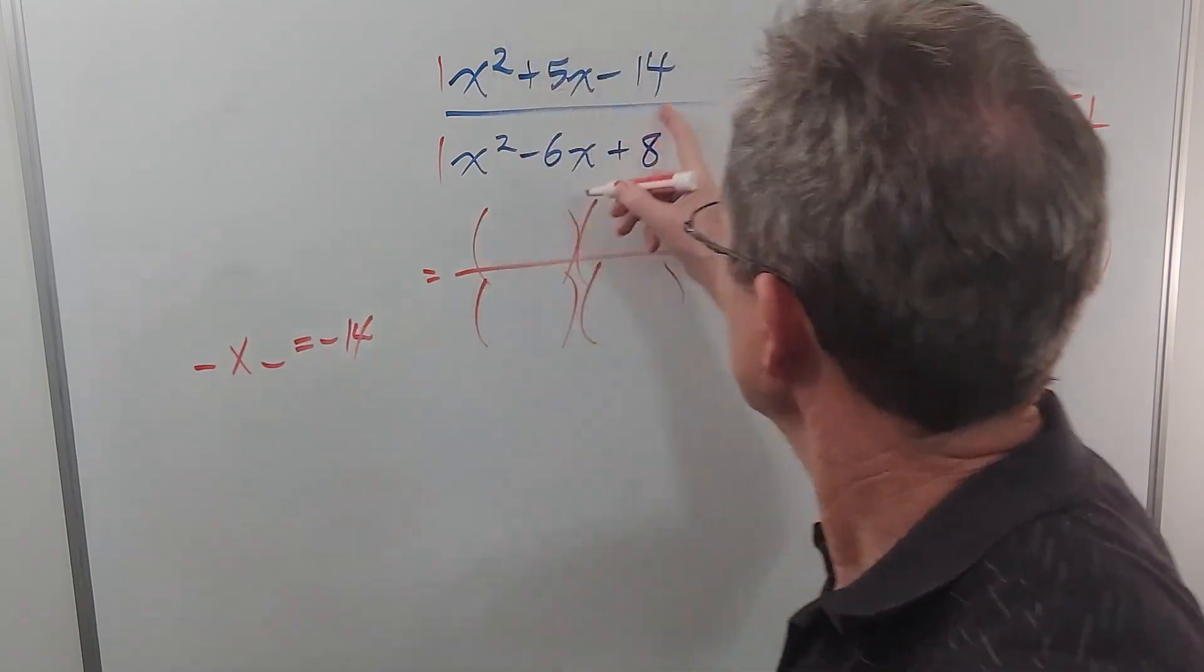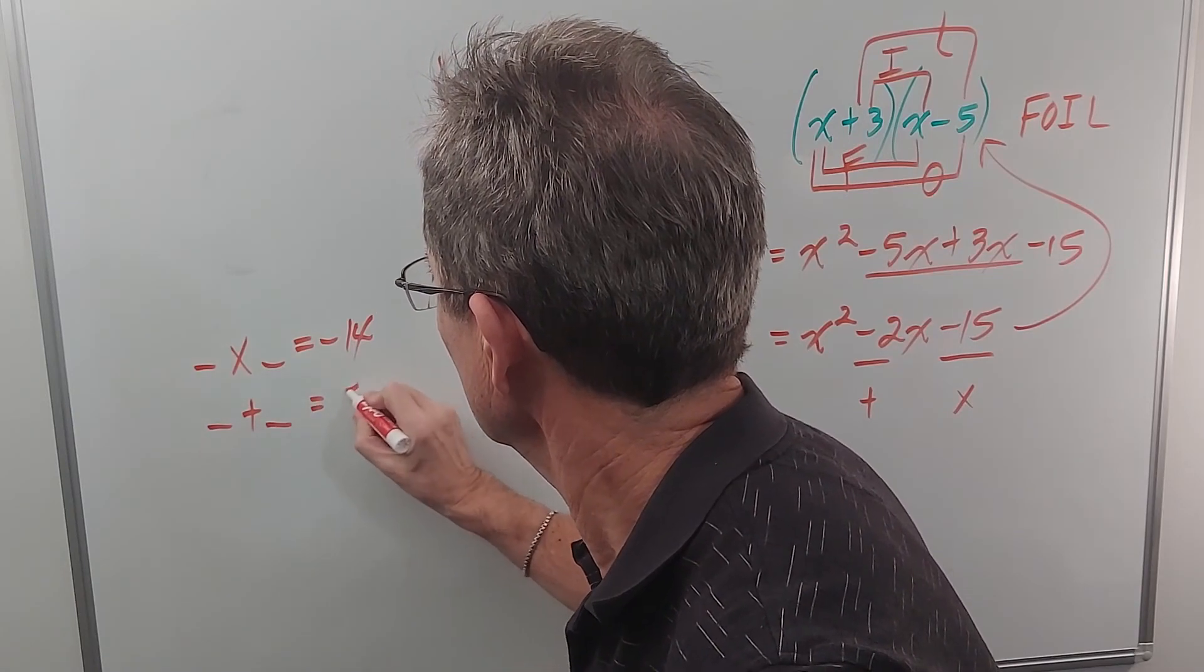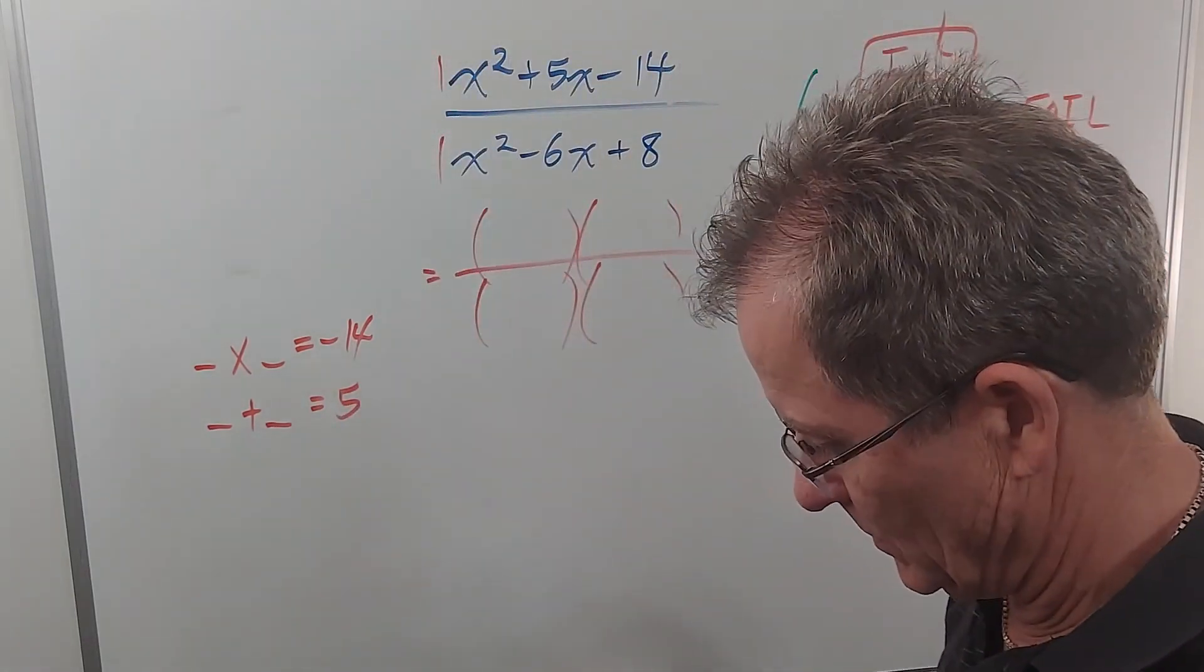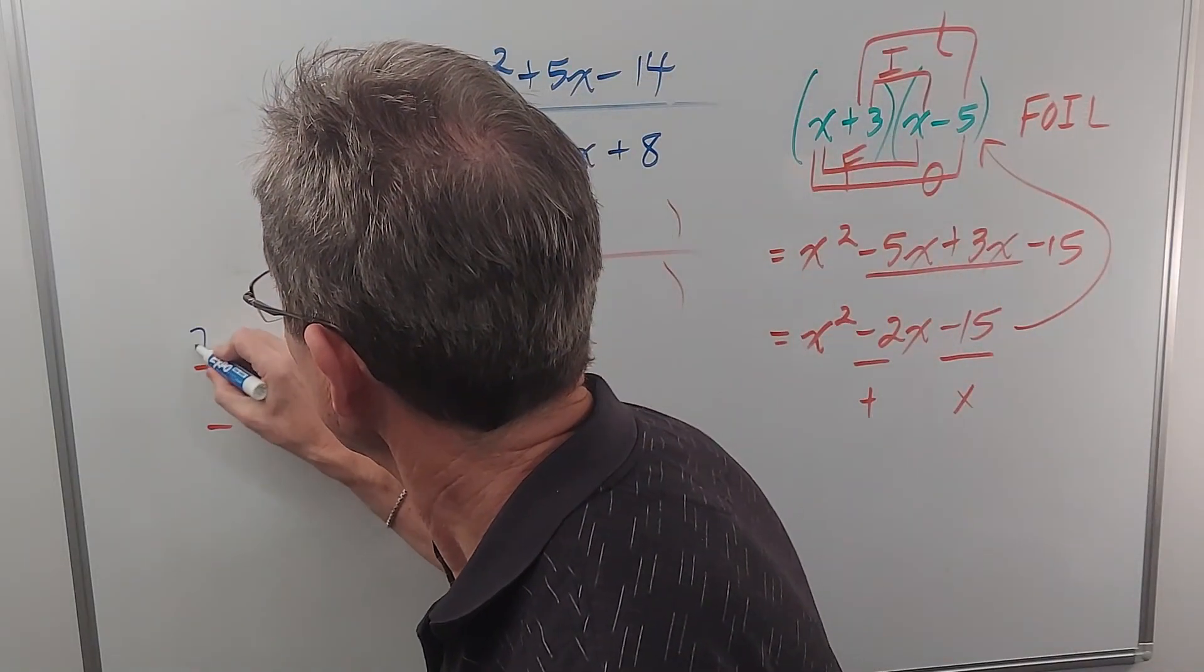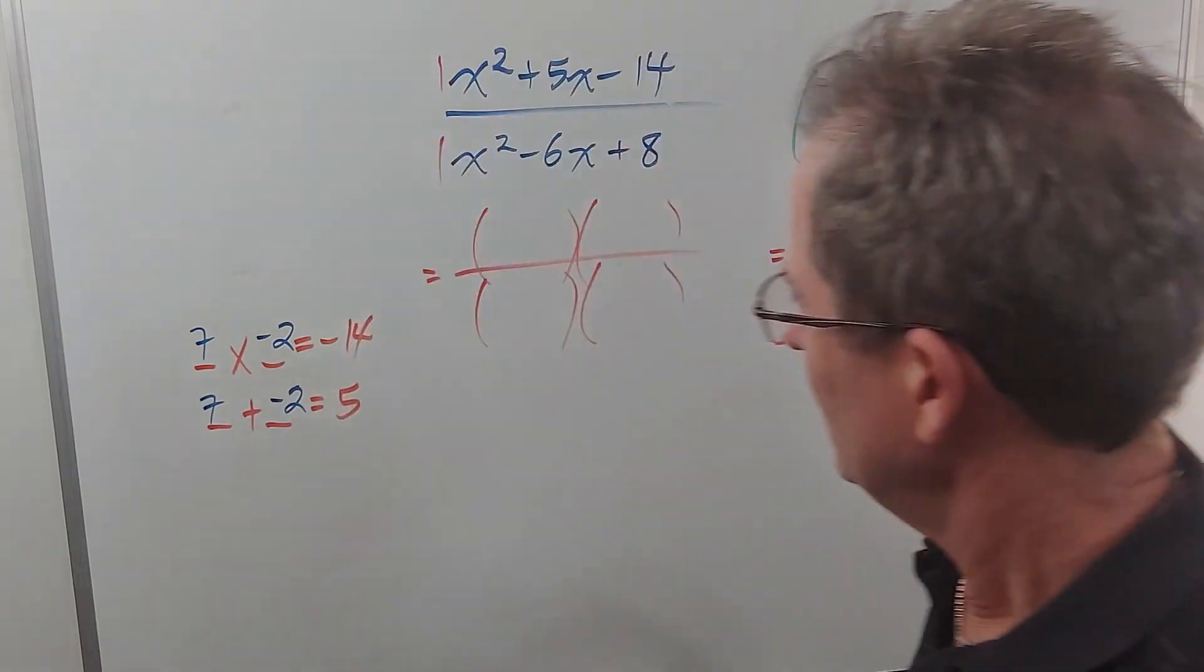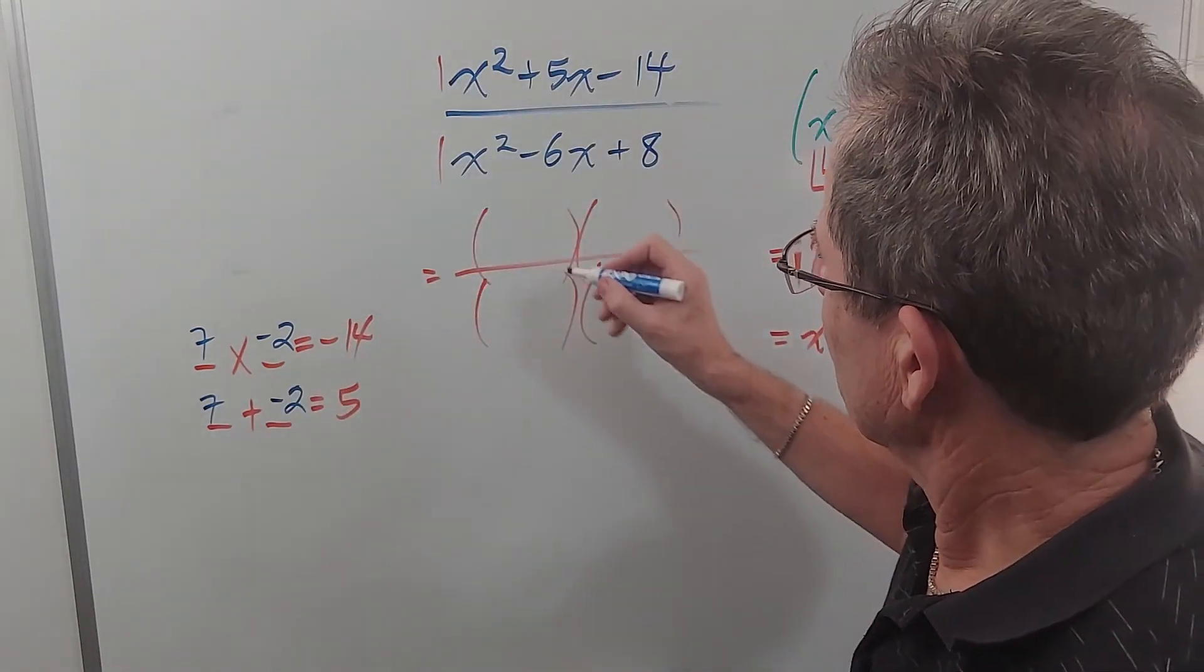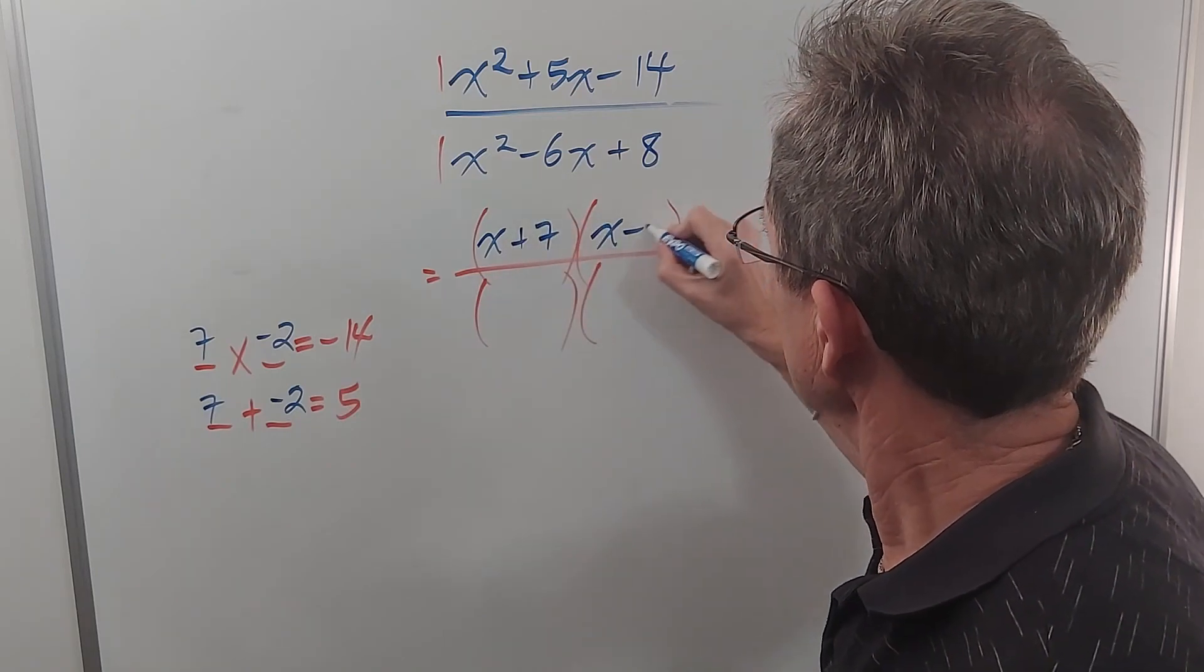That multiply to negative fourteen and add up to five for the numerator. And those numbers, if you think about it for a moment, would be seven and negative two. There's only one possibility, or none if it doesn't factor. So I'm going to get x plus seven times x minus two.